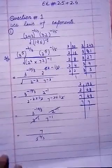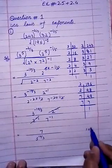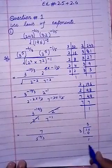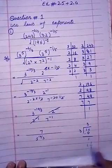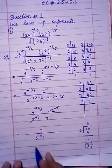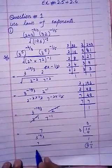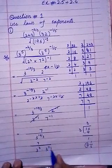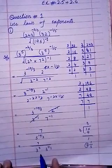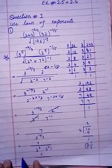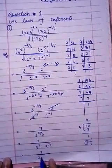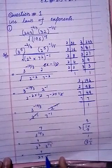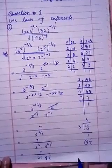Now 10 raised to power 3: first divide 10 by 3 — 3 times 3 is 9, remainder 1, so the whole part is 3 and fraction is 1 by 3. Separate the whole part: 7 divided by 3 raised to power 3, then 3 raised to power 1 by 3. 7 raised to power 3 equals 343. Now write under root 3 — it is the index form. That is the final answer.